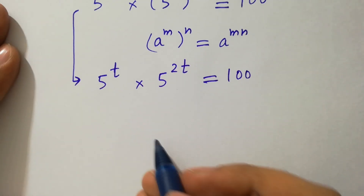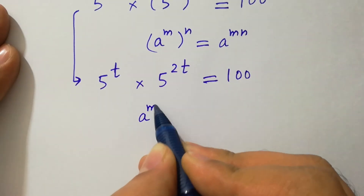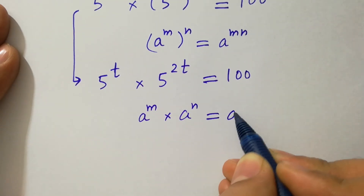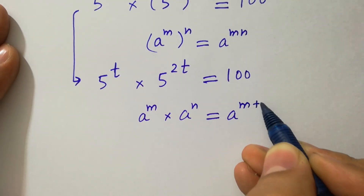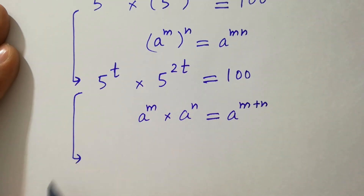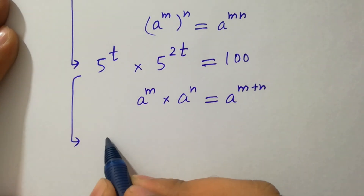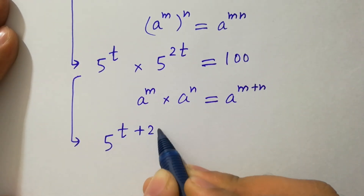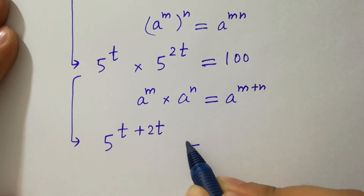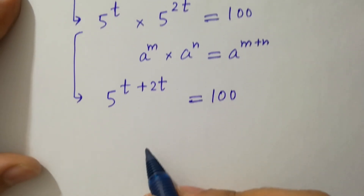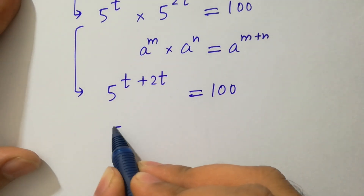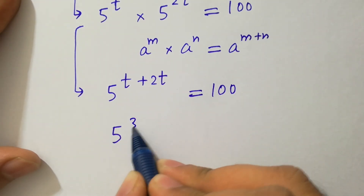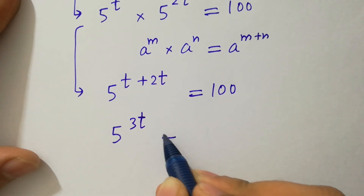As we know, a to the power m times a to the power n equals a to the power m plus n. And we get 5 to the power t plus 2t equal to 100. So 5 to the power 3t equals 100.